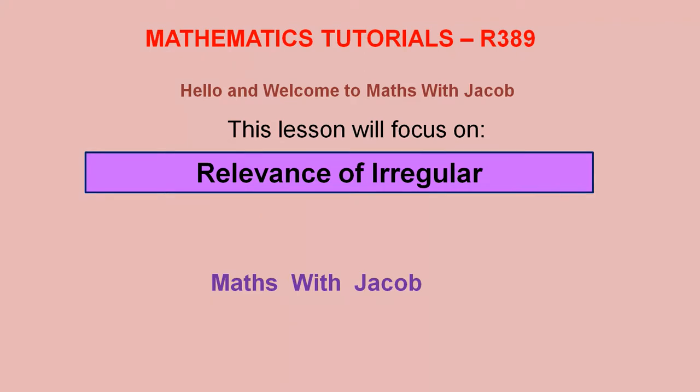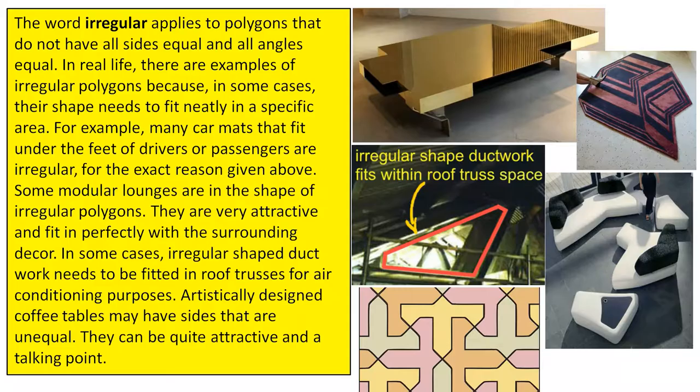Hello and welcome to Maths with Jacob. This lesson will focus on the relevance of irregular polygons. The word irregular applies to polygons that do not have all sides equal and all angles equal.